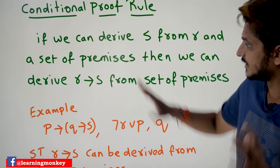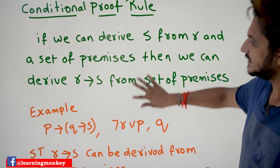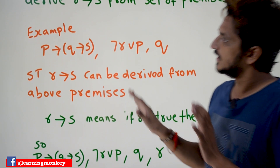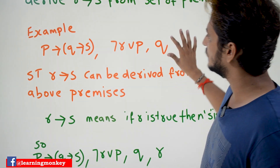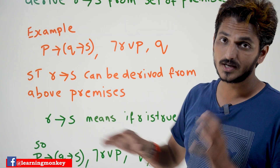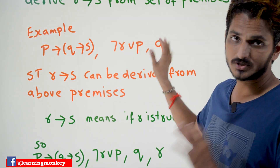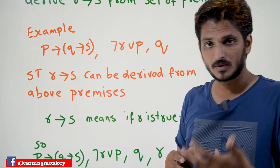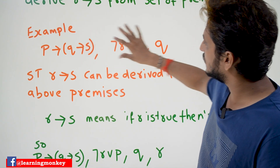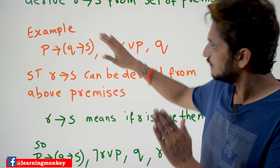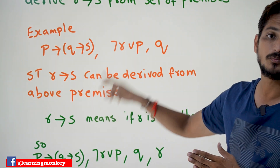Let's try to understand this definition with an example. If they have given a set of premises — this is one, this is the second, this is the third — all these propositions we call premises. Hoping that you already know what premises means: a set of propositions whose values are true. If these propositions are true, then we need to show that R implies S can be derived from the above premises.